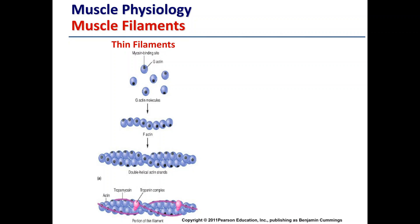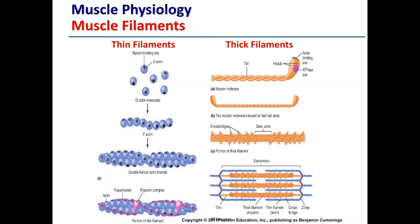There are a couple of other structures making up the thin filament: tropomyosin, which is a band running across the actin filaments, and a troponin complex attached to the tropomyosin. You'll notice that the tropomyosin is oriented in such a way that it is blocking the myosin binding site on each of the actin molecules. There are two tropomyosin bands on each of the interweaving double helical actin strands.